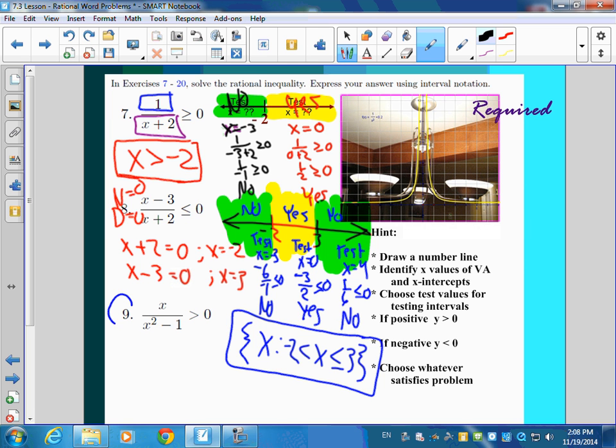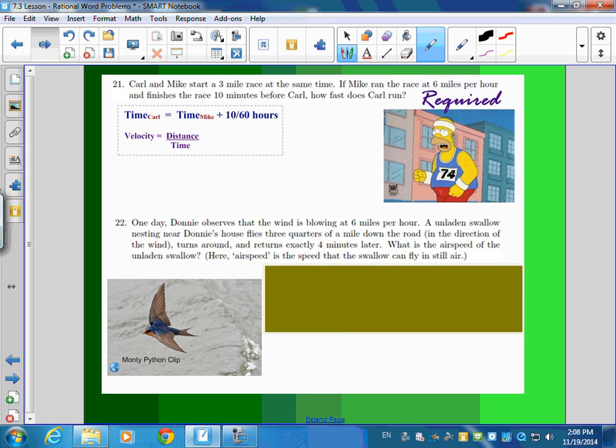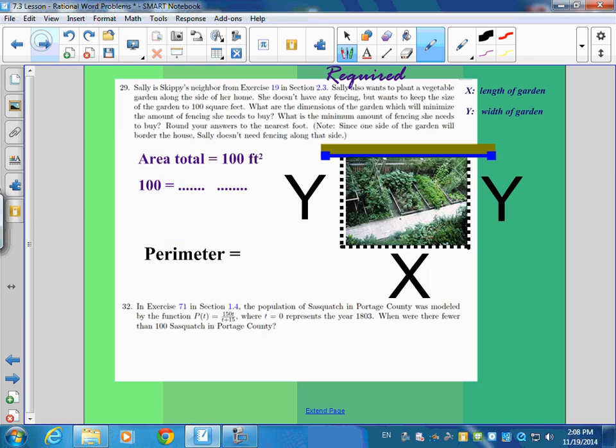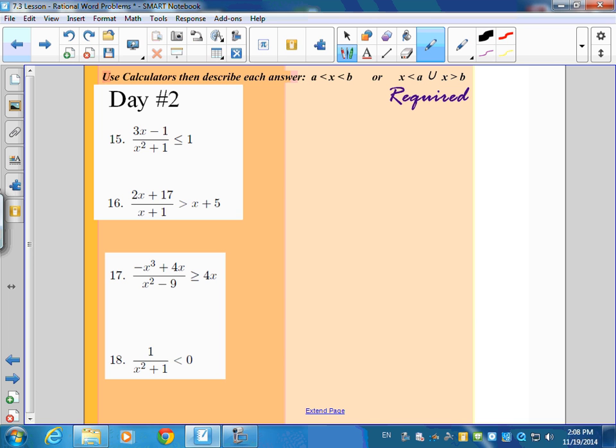You try number nine. So don't forget you still have one and two to do. Number nine, and then zip down to day two. It's down a ways, not too far. Circle 15, 16, 17, and 18. Those are due for tomorrow. That's it for tomorrow.